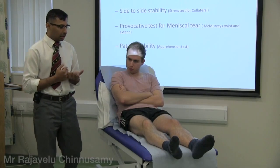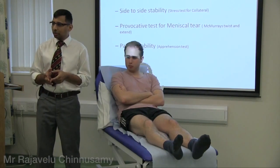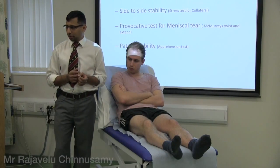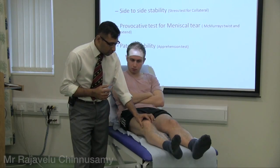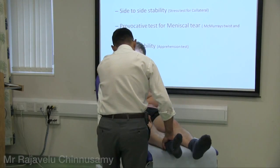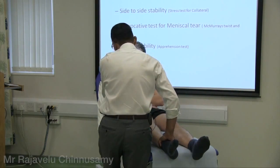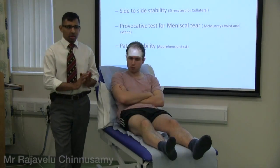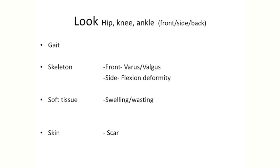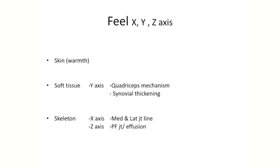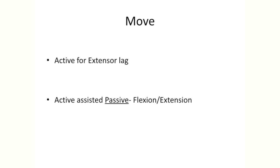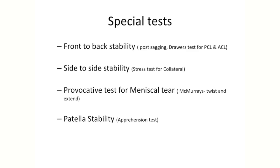Front to back, side to side, and meniscal impingement done. If there is a young patient with a history of subluxation of the patella, then you do the patella apprehension test — otherwise don't do this on elderly patients. All you do is try to displace the patella laterally, look at the patient's face, and ask them to bend the knee. If they are apprehensive they will stop bending — that is a positive patella apprehension test.